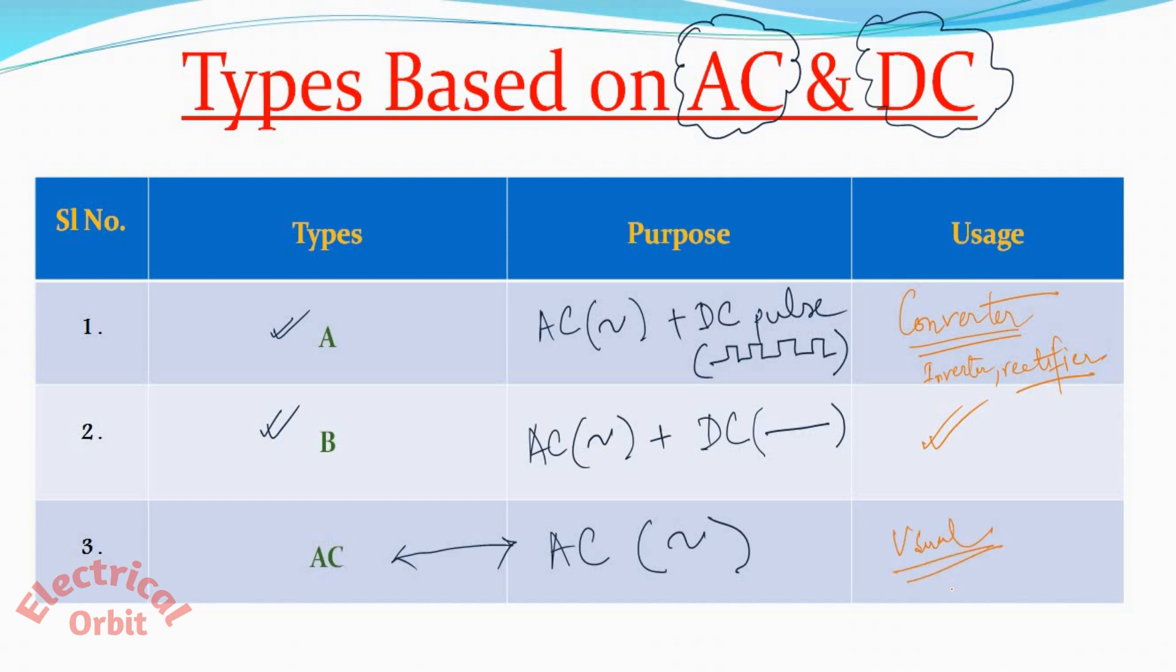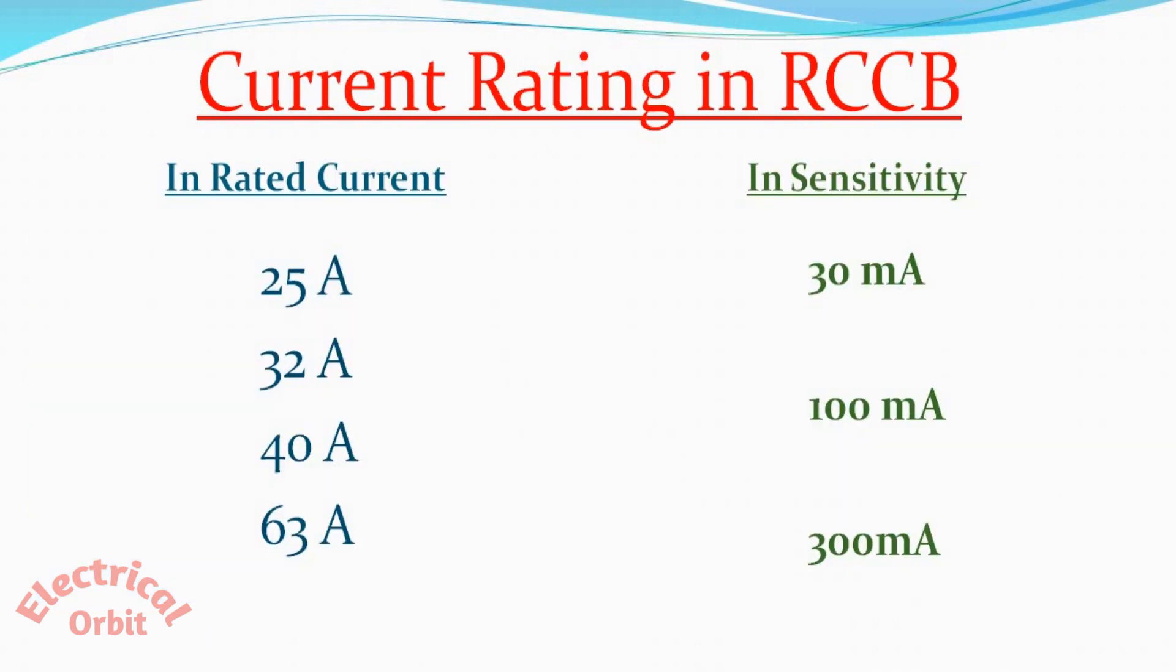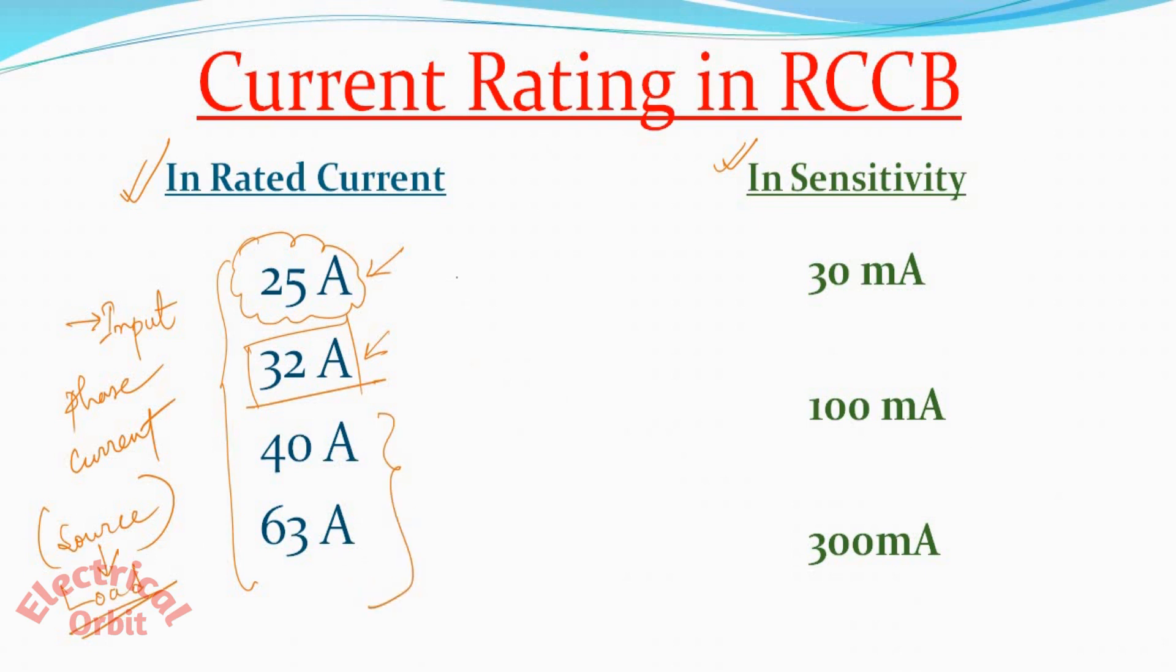Now next type is based on current rating. Now what is current rating. There is two types of ratings: one is rated current, another is leakage current or in terms of sensitivity. These ratings are the ratings of input phase current. That means the current is coming from the source and going to the load. If the range of your current is up to 25 ampere, then you should go for a 25 ampere rated RCCB. If it is beyond 25 ampere but less than 32, then you should go for 32 ampere RCCB, and that is for 40 and 63 ampere RCCB. These are based on your market availability.